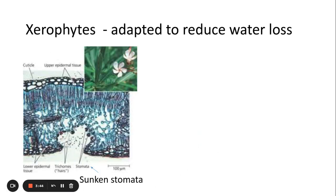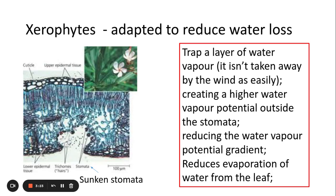The next adaptation is sunken stomata. As you can see in this particular example here, the stomata are in an almost pit-like area. Normally in a regular leaf you'd find the stomata on the bottom of the leaf, but with sunken stomata you get this pit-like structure. It traps a layer of water vapor so that the wind can't take it away as easily, giving a high water vapor potential outside of the stomata, reducing the water vapor potential gradient and reducing evaporation of water vapor from the leaf.